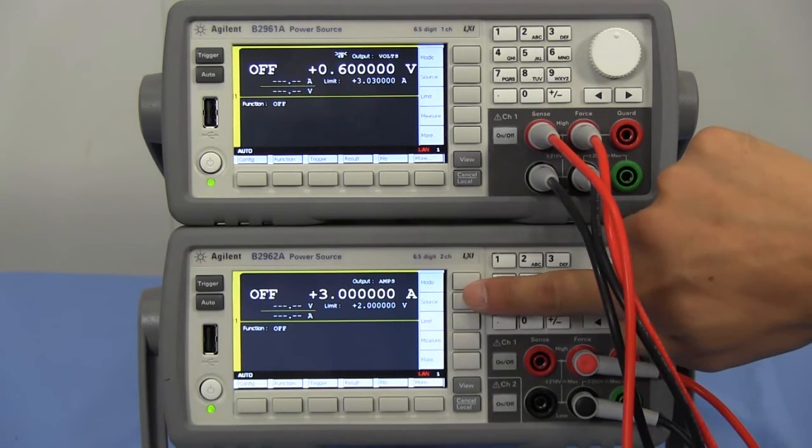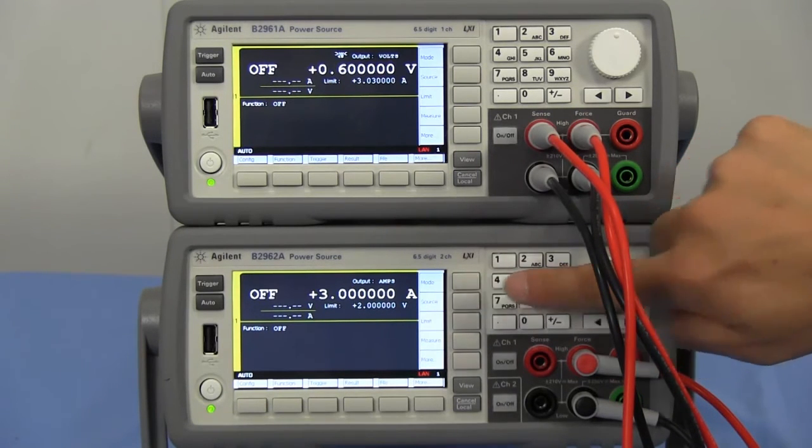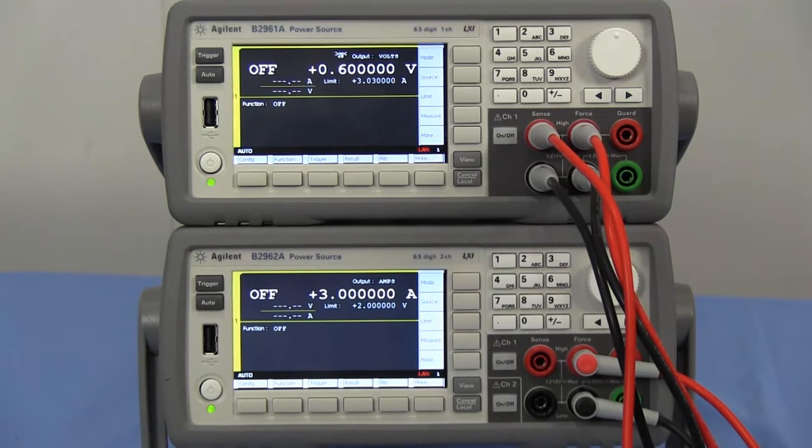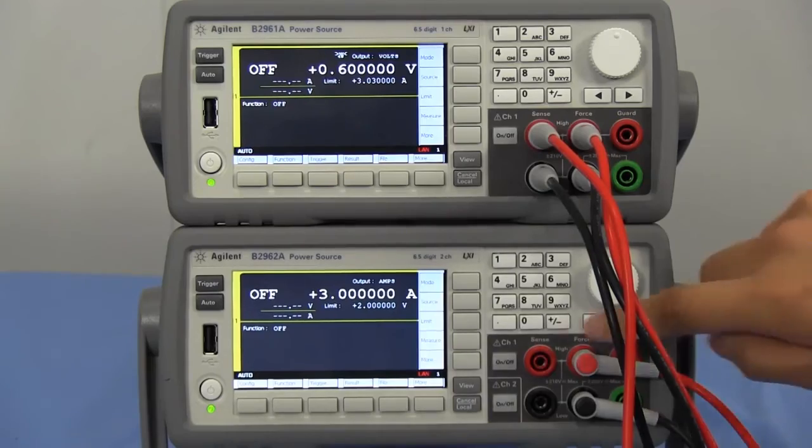The downside power supply is set as a current source. The output current is set to 3 amps. The voltage limit is set to 2 volts. I'm turning them on.